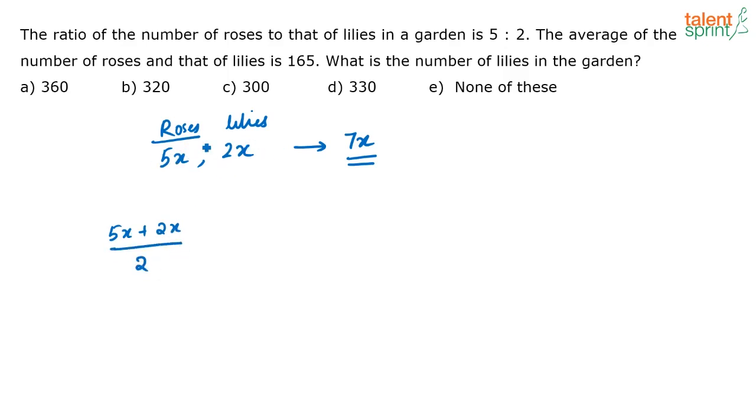What is average? The total number of flowers divided by number of types. Correct? You have two types of flowers here. So 5x plus 2x divided by 2, that is equal to 7x by 2.